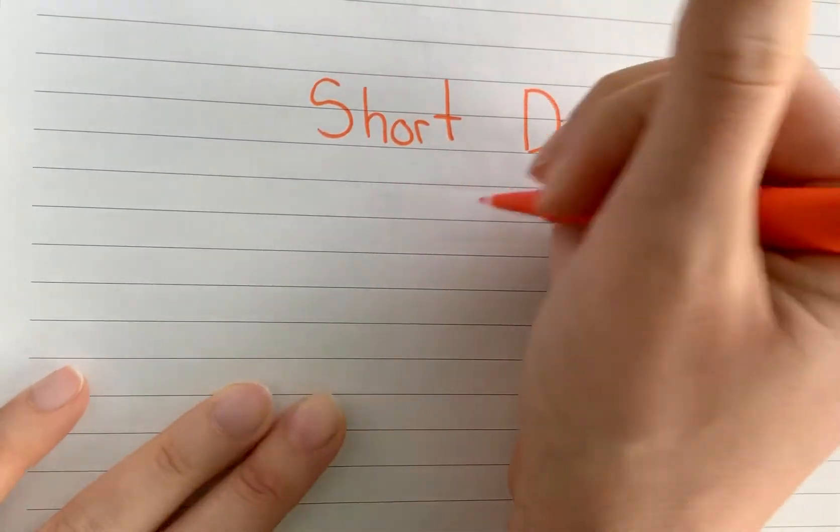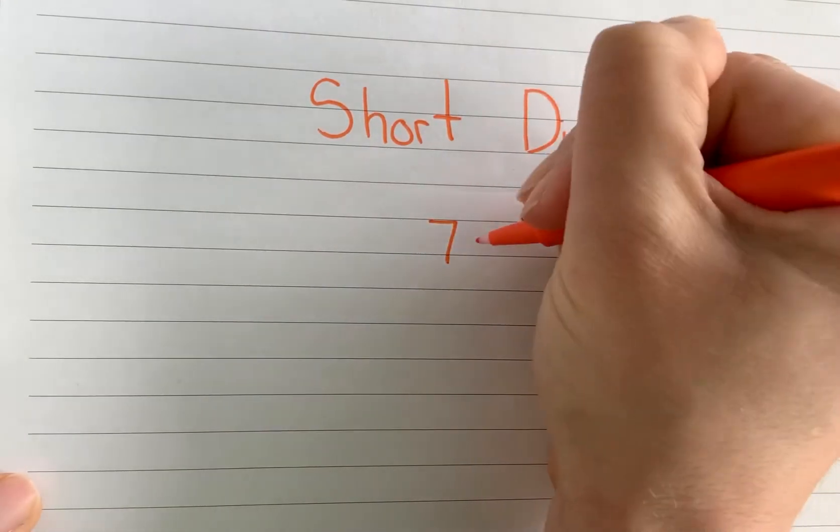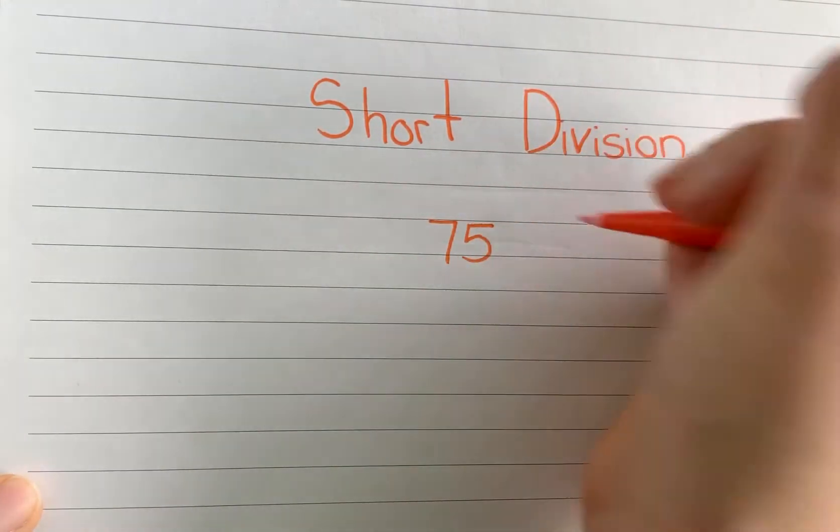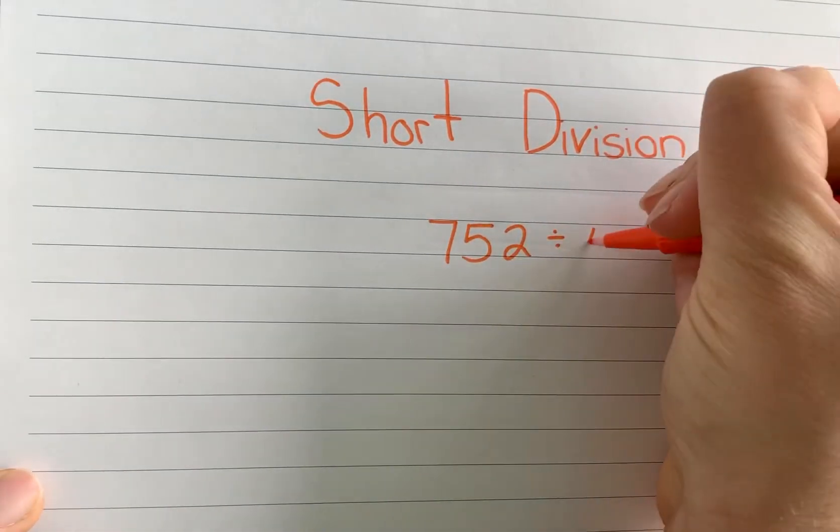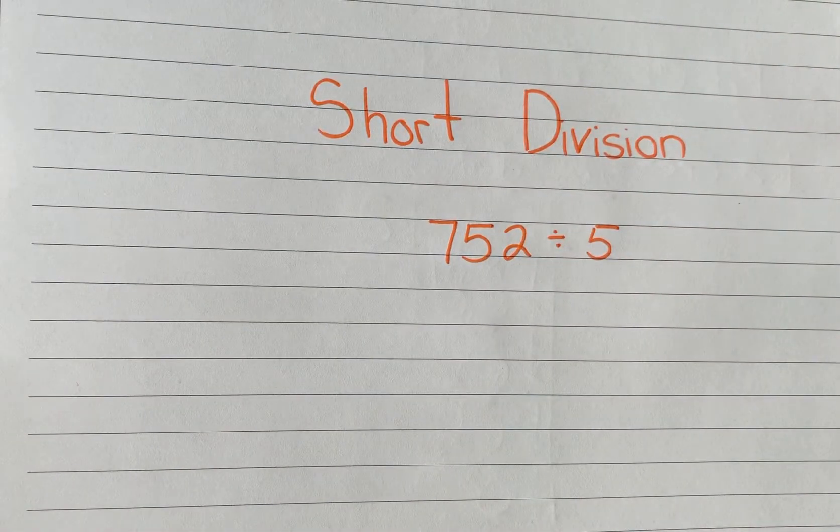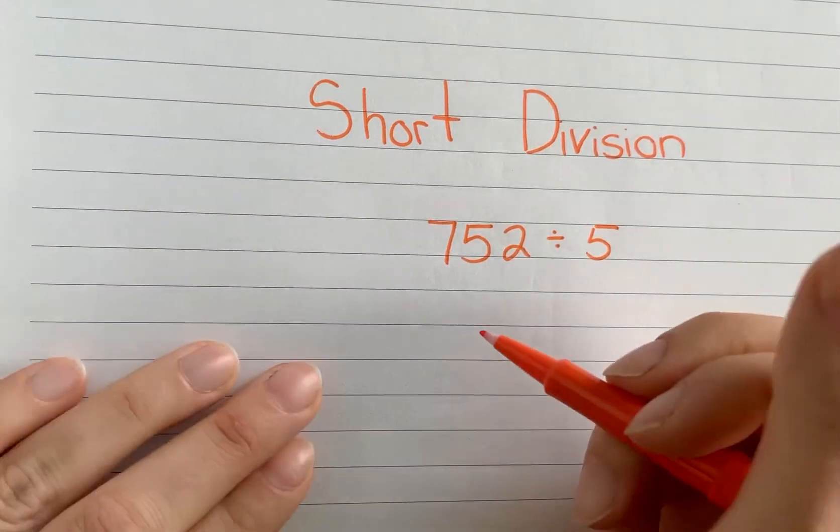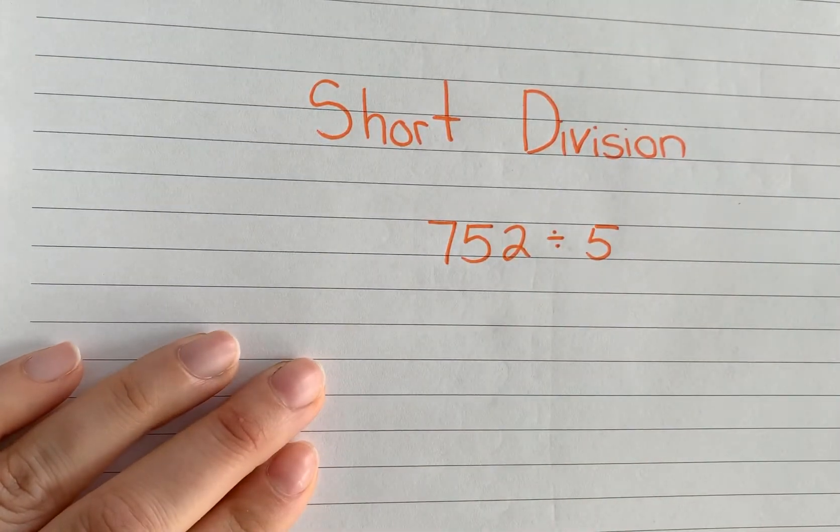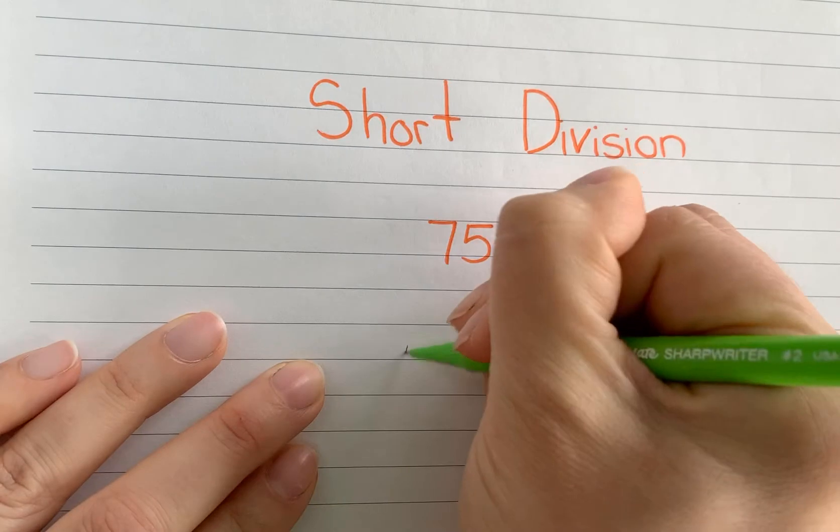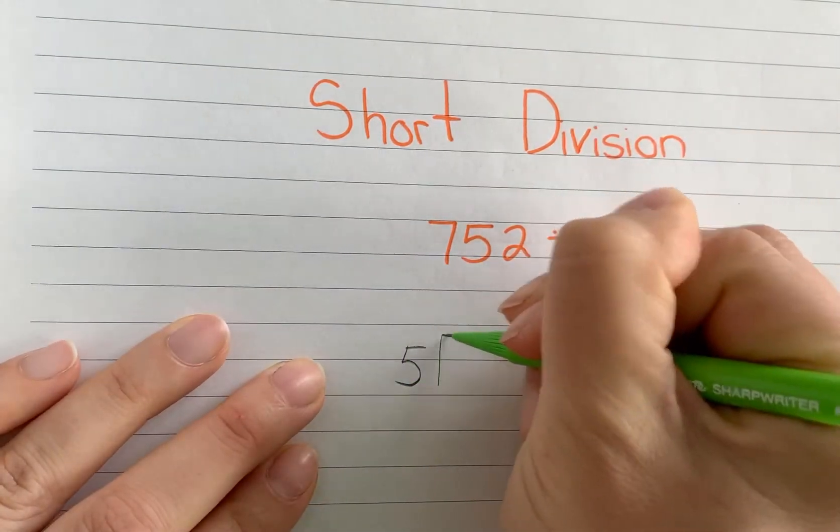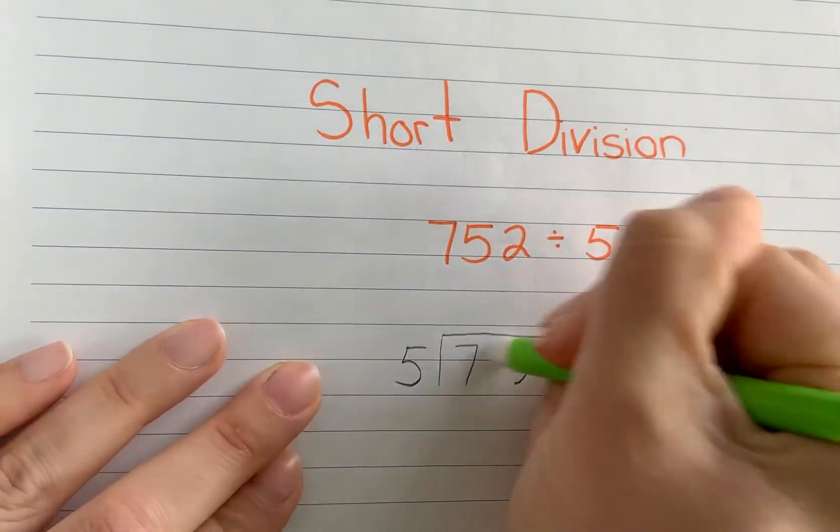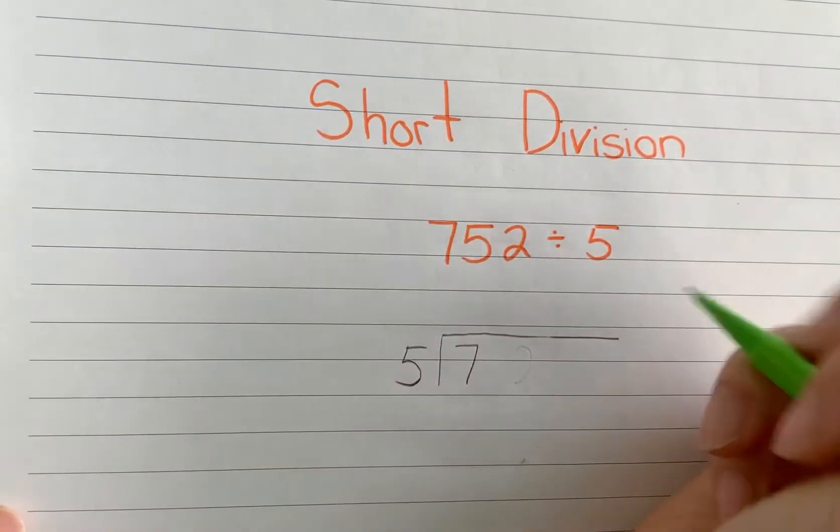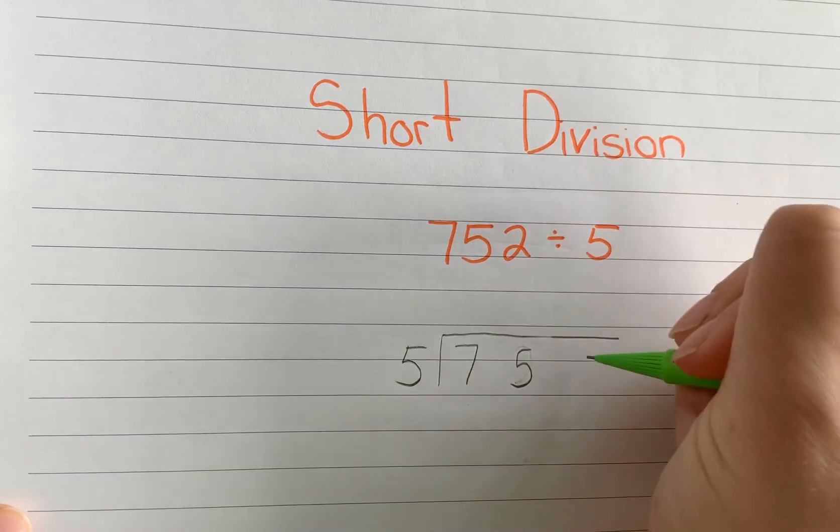Let's do 752 divided by 5. Okay, we're gonna set this up the same way. I'm gonna use two different colors. I'll put my 5 on the outside. 700 and, oopsies, good thing I used a pencil. 752.